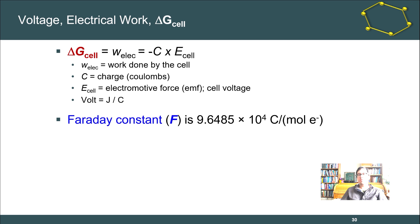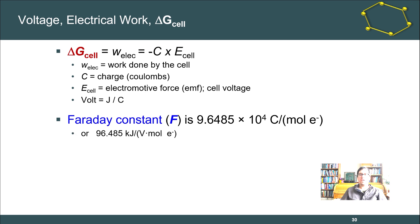We'll often want to work with moles rather than individual electrons. To do that we use Faraday's constant, abbreviated capital F. Faraday's constant is 9.65 × 10⁴ coulombs per mole of electrons — obtained by multiplying the charge on one electron by Avogadro's number. It can also be expressed as 96.485 kilojoules per volt·mole of electrons. These unit forms help us describe our system in different terms.